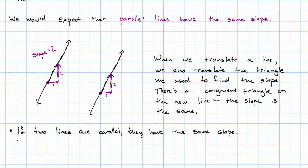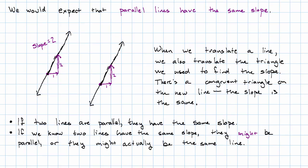Now, on the other hand, this is a little bit odd. If we know that two lines have the same slope, they might be parallel, or they might actually be the same line.